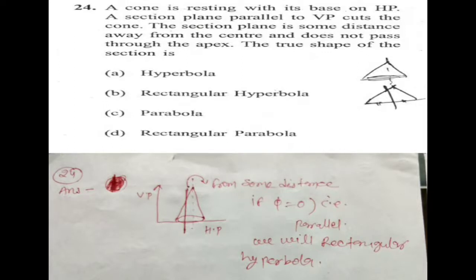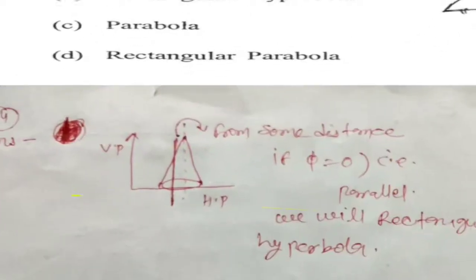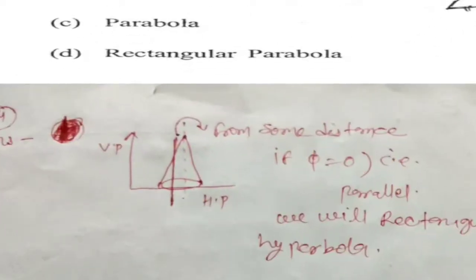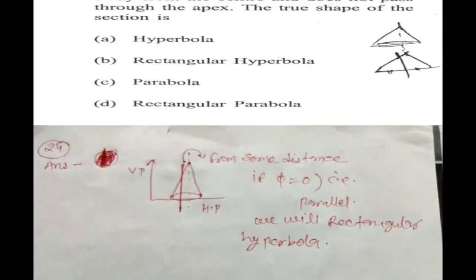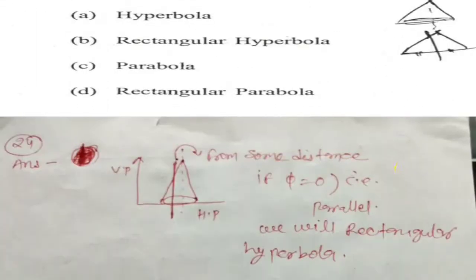So this is not on the center — it has some distance from its apex. The true shape of the section — see there. In this question they are referring to what we already discussed about the conic section of cones.